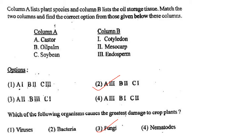Next one: Column A lists plant species and Column B lists the oil storage tissue. Match the two columns. Options: 1, A1-B2-C3; 2, A3-B2-C1; 3, A2-B3-C1; 4, A3-B1-C2. Answer is option 2: A3 castor-endosperm, B oil palm-mesocarp, and C soybean-cotyledon.